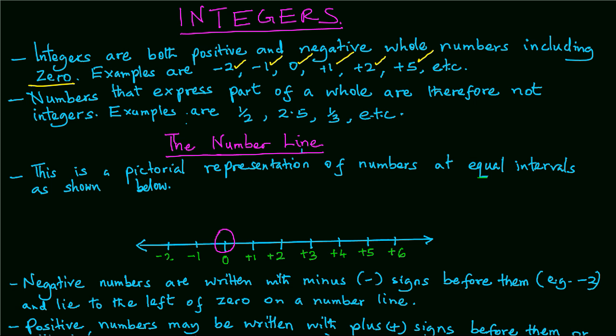Numbers that express part of a whole are therefore not integers. So we have a half, a quarter, 2.5, a third, two-thirds, etc.